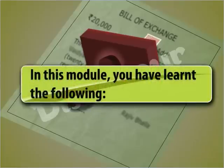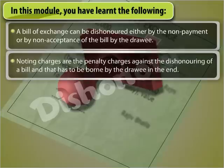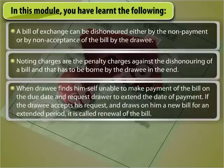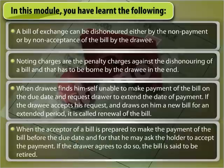In this module, you have learnt the following. A bill of exchange can be dishonoured either by non-payment or by non-acceptance of the bill by the drawee. Noting charges are the penalty charges against the dishonouring of a bill and have to be borne by the drawee in the end. When the drawee finds himself unable to make payment on the due date and requests the drawer to extend the date of payment, if the drawer accepts and draws a new bill for an extended period, it is called the renewal of the bill. When the acceptor of a bill is prepared to make payment before the due date and asks the holder to accept the payment, if the drawer agrees, the bill is said to be retired.